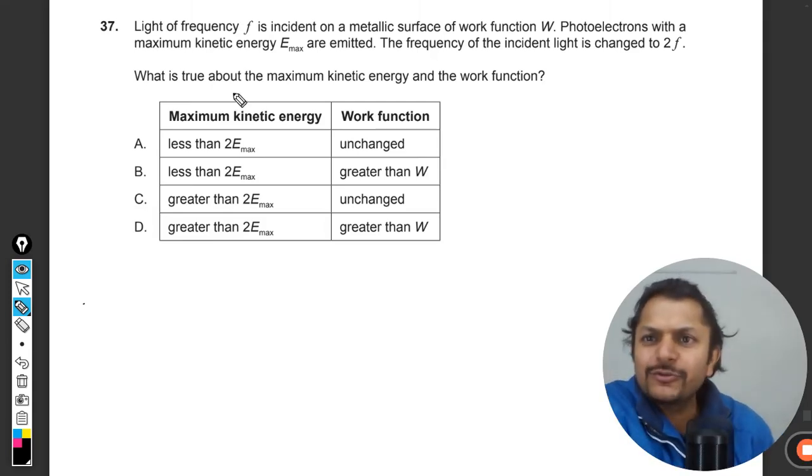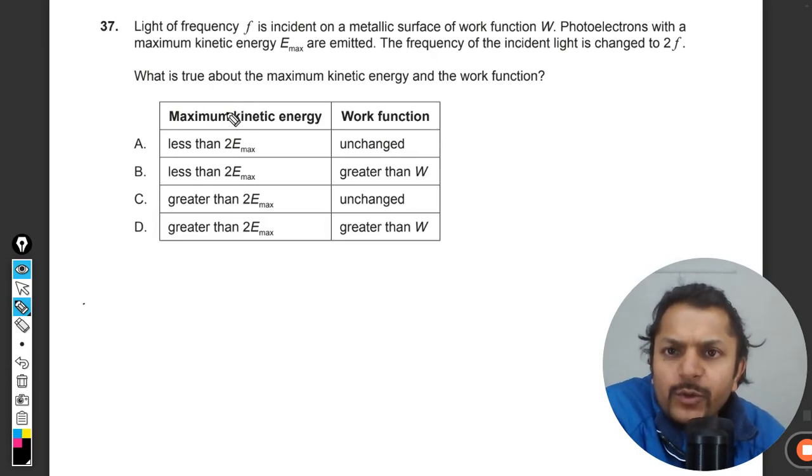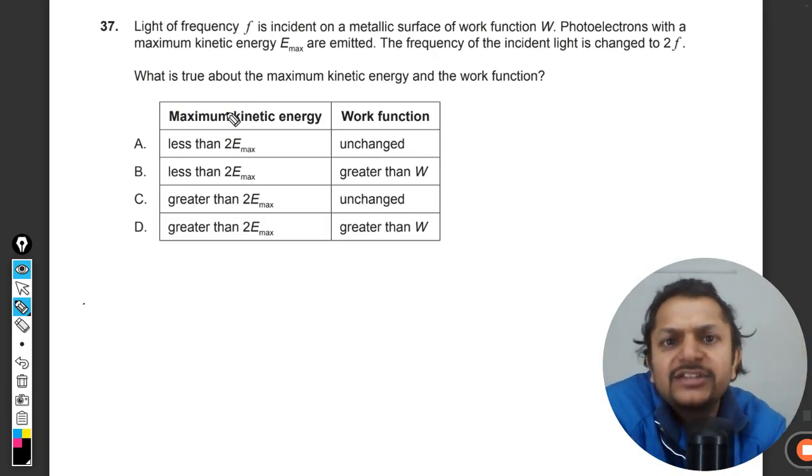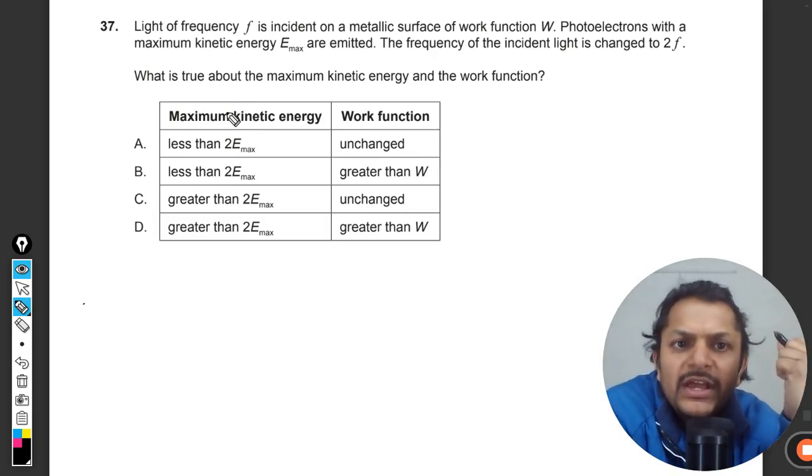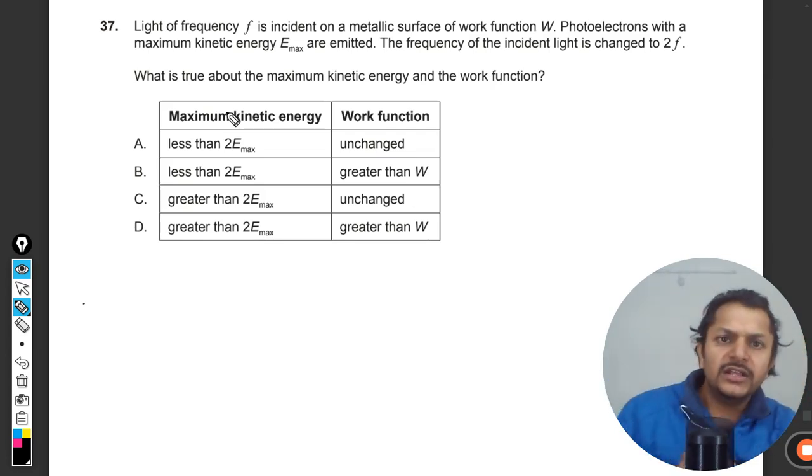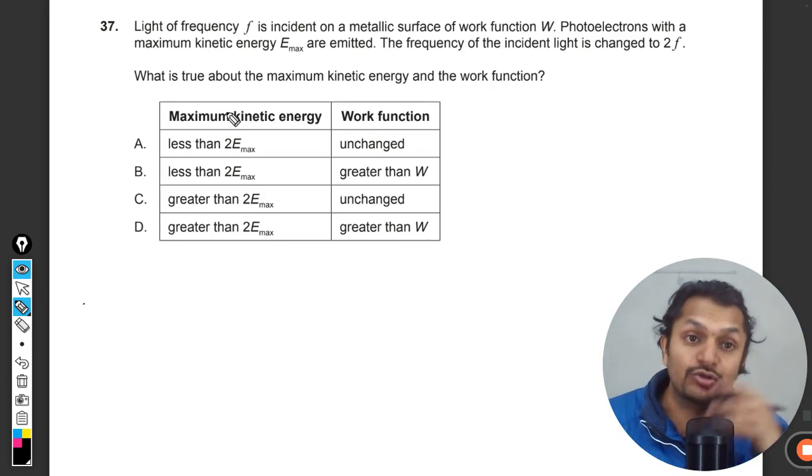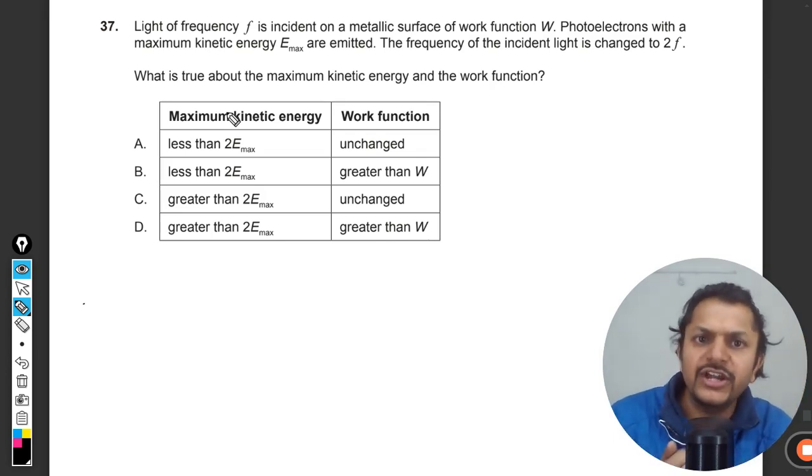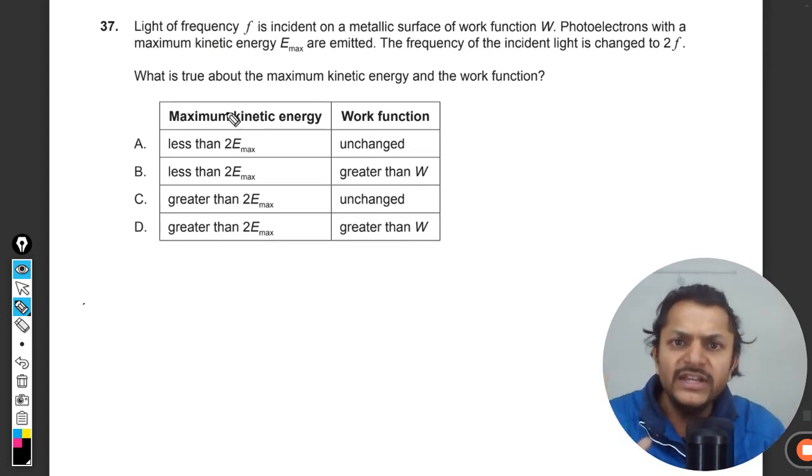Okay, let's see what is there in this question. Light of frequency f is incident on a metallic surface of work function W. Photoelectrons with a maximum kinetic energy E_max are emitted. The frequency of incident light is now changed to 2f. What is true about the maximum kinetic energy and the work function?